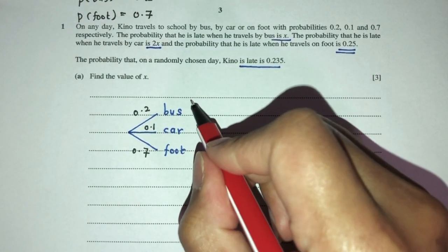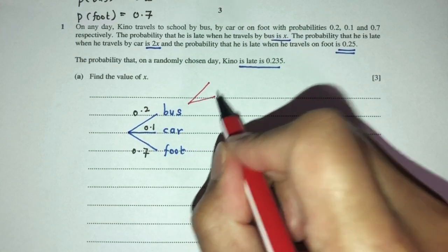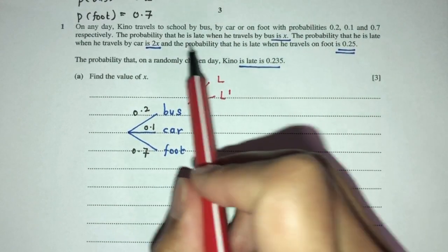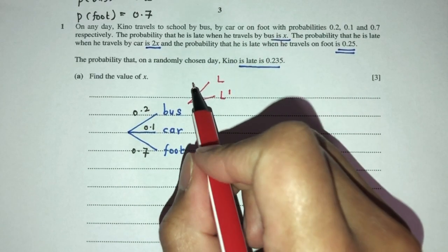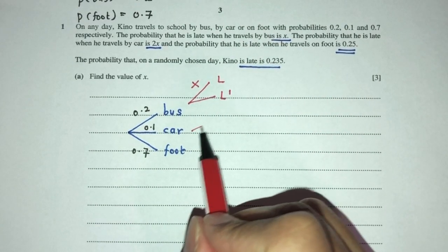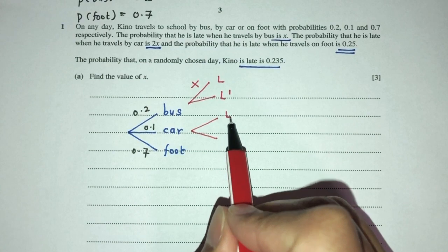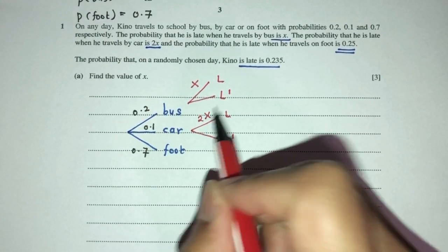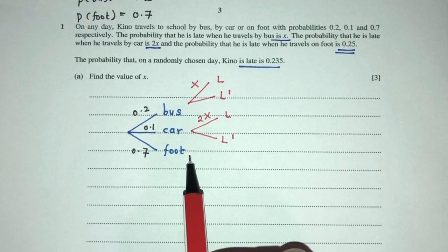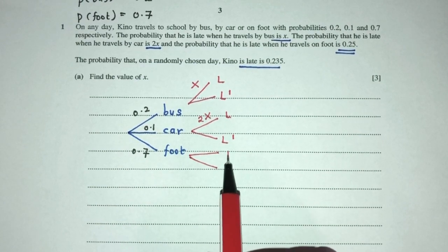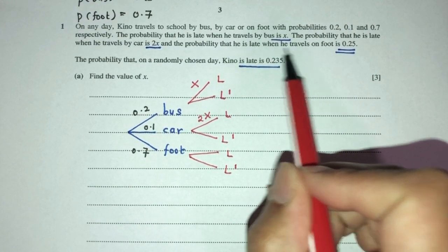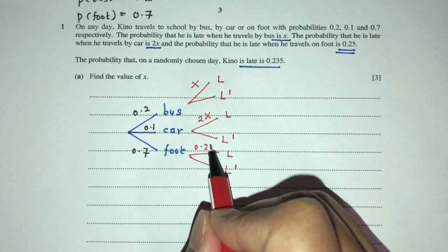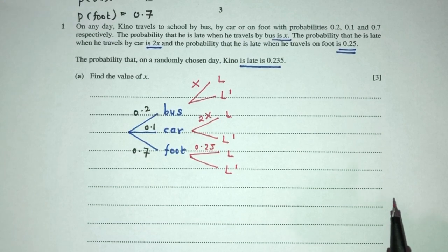Now if he goes by bus, he can be late or not late. If he is late when he travels by bus will be x. Now by car, he is late or not late. Car should be 2x. And last one, if he travels by foot, he is late, that should be 0.25. There you go. So now it is way easier to understand how to use this.